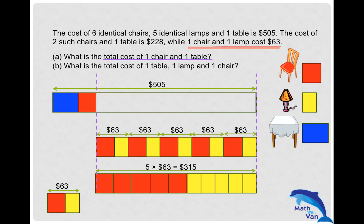You see the answer now. We're left with one blue and one red. Once you take away $315, you're left with this. This is your answer for part (a): one chair plus one table is $505 - $315 = $190.